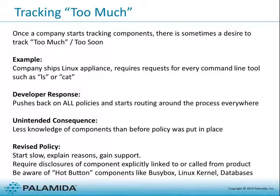When developers track what's easy — enumerating command line tools and GPL RPMs you're giving away anyway while missing all the commercial code and Java libraries in your user interface — you lose the important information. Make sure the team understands why you're asking. Compliance and vulnerability tracking are important. For some organizations, start with Linux components first; others start with things they explicitly control, their own applications and libraries. Start slow, explain your reasons, and then gain support.